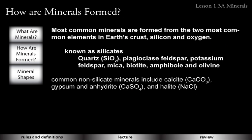That brings us to our next section: how are minerals formed? Most common minerals are formed from the two most common elements in Earth's crust — silicon and oxygen — and those are known as the silicates. That includes quartz, which we've talked about already, and bigger named minerals like plagioclase feldspar, potassium feldspar, mica, biotite, amphibole, and olivine. We'll talk more about these in Part B.